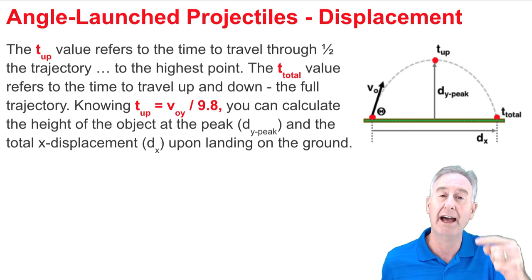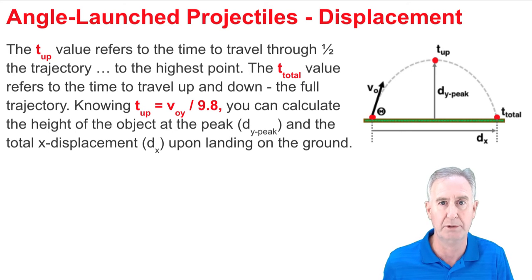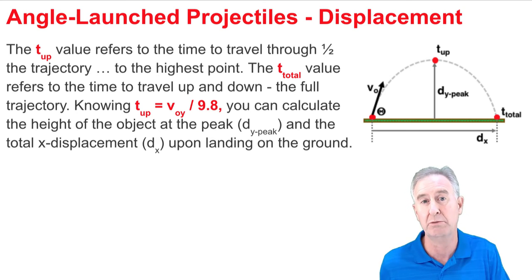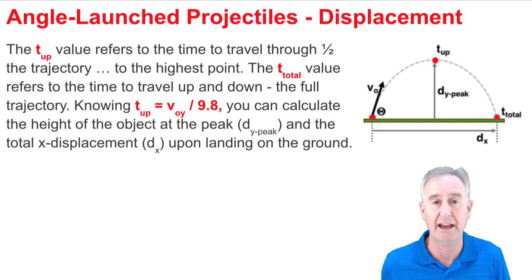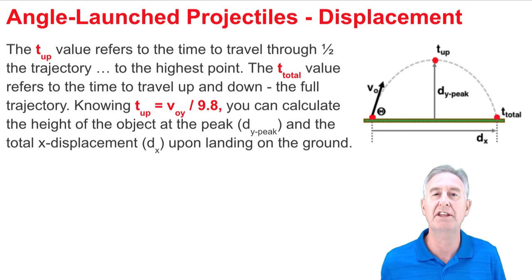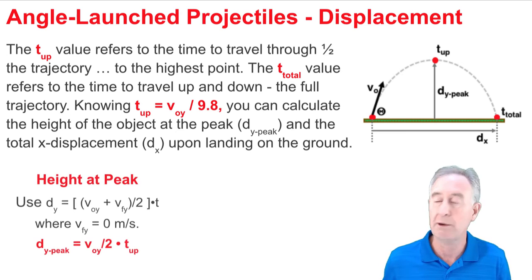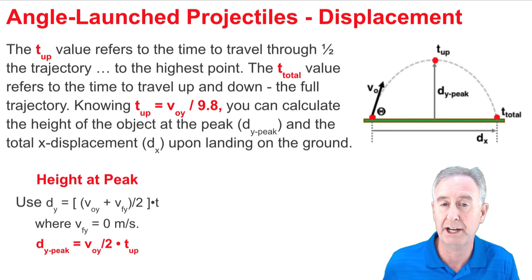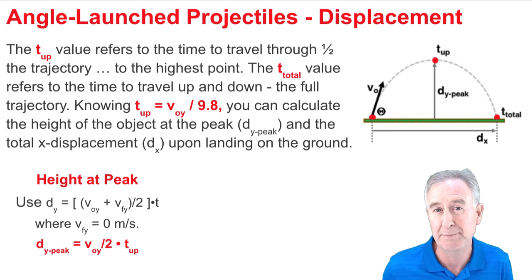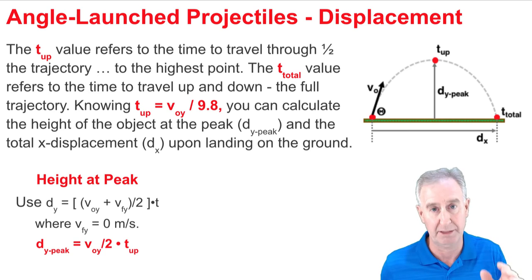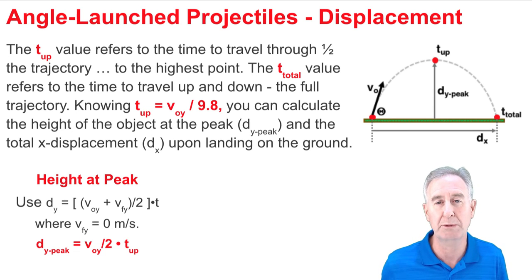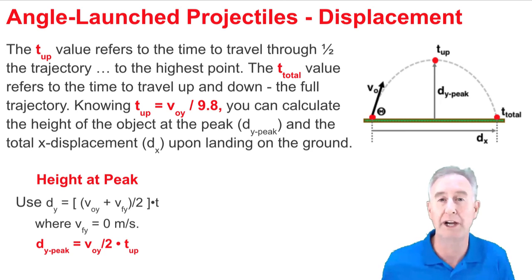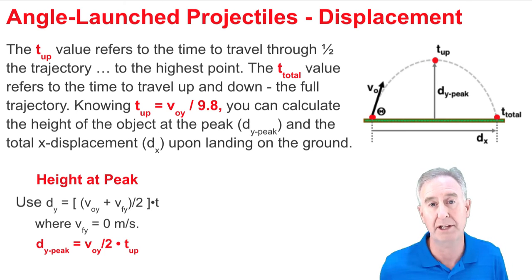The height at the highest point — what I call the dy at the peak position at the halfway time point — and the total horizontal displacement, that is the dx after t has reached t total. To calculate the height at the highest point, I would use this equation: d equals v original y plus v final y, divided by 2, multiplied by the time up. Now the v final y at the highest point is 0 meters per second, so the equation simplifies to dy equals v original y divided by 2, multiplied by the time up.